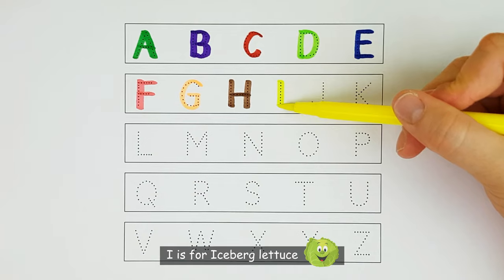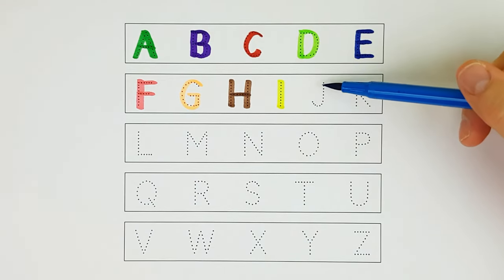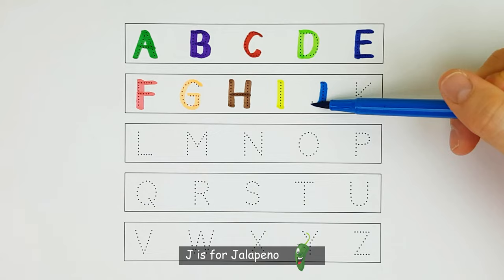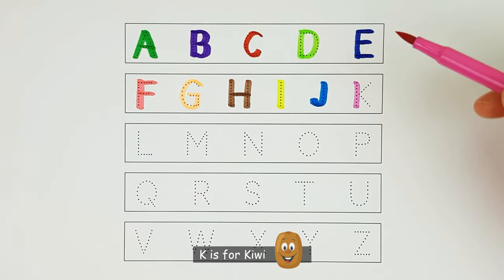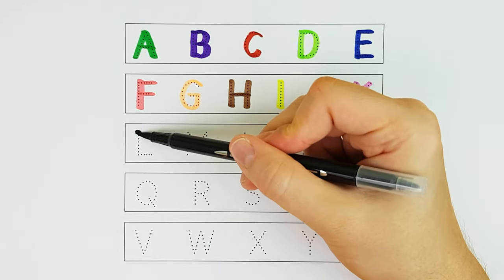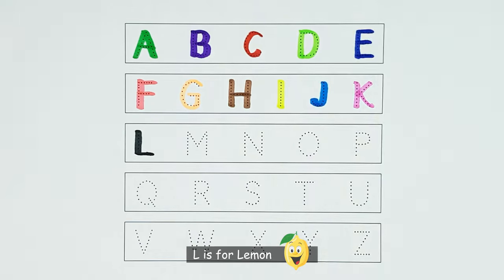I. I is for iceberg lettuce. I. J. J is for jalapeno. J. K. K is for kiwi. K. L. L is for lemon. L.